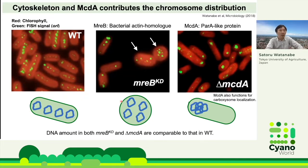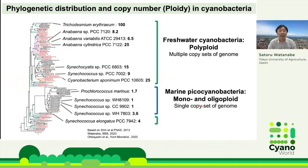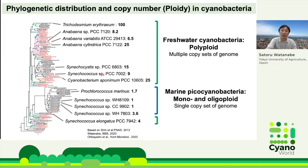We found that the distribution of multiple chromosomes involves the cytoskeleton and ParA-like protein, McdA. The mutants of these genes show evident chromosomal misdistribution. Ploidy, meaning chromosomal copy number, is different among cyanobacteria. I show here the copy number of each organism already reported, with a cyanobacterial phylogenetic tree. The freshwater cyanobacteria — not only Synechococcus and Synechocystis, but also filamentous species like Anabaena — are polyploid, while most marine picocyanobacteria are single copy per cell, similar to E. coli and B. subtilis.